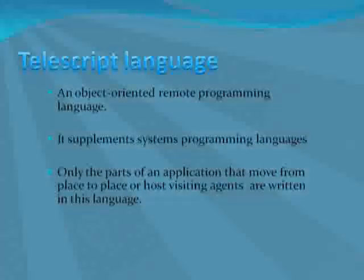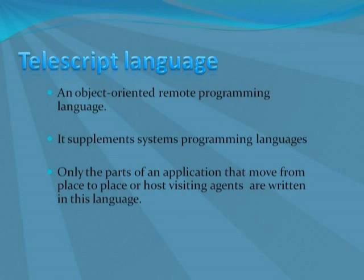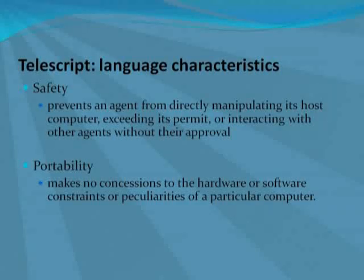The Telescript language is an object-oriented remote programming language. It supplements rather than replaces systems programming languages like C and C++, and only the parts of an application that move from one place to another — like agents or hosts visiting agents — are written in this language. There are four main language characteristics of Telescript. The first is safety: the language prevents an agent from directly manipulating its host computer or interacting with other agents without their approval, which helps prevent the spread of viruses. The next is portability: the language makes no concession to the hardware or software constraints of a particular computer, meaning that an agent or place can be executed anywhere in a network.